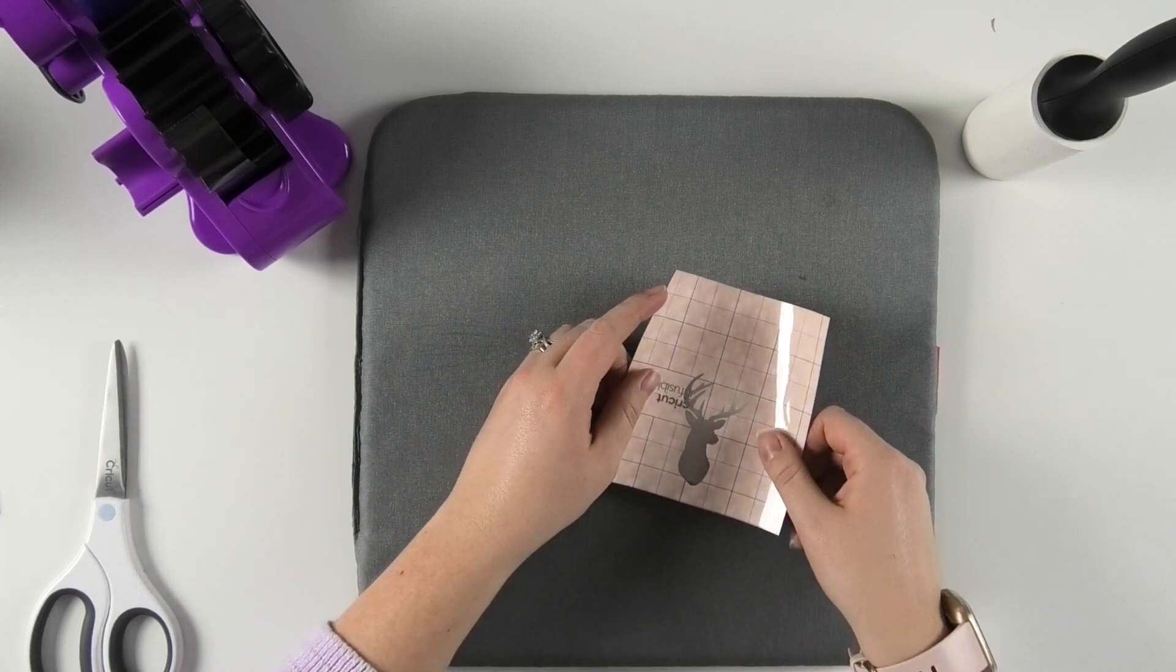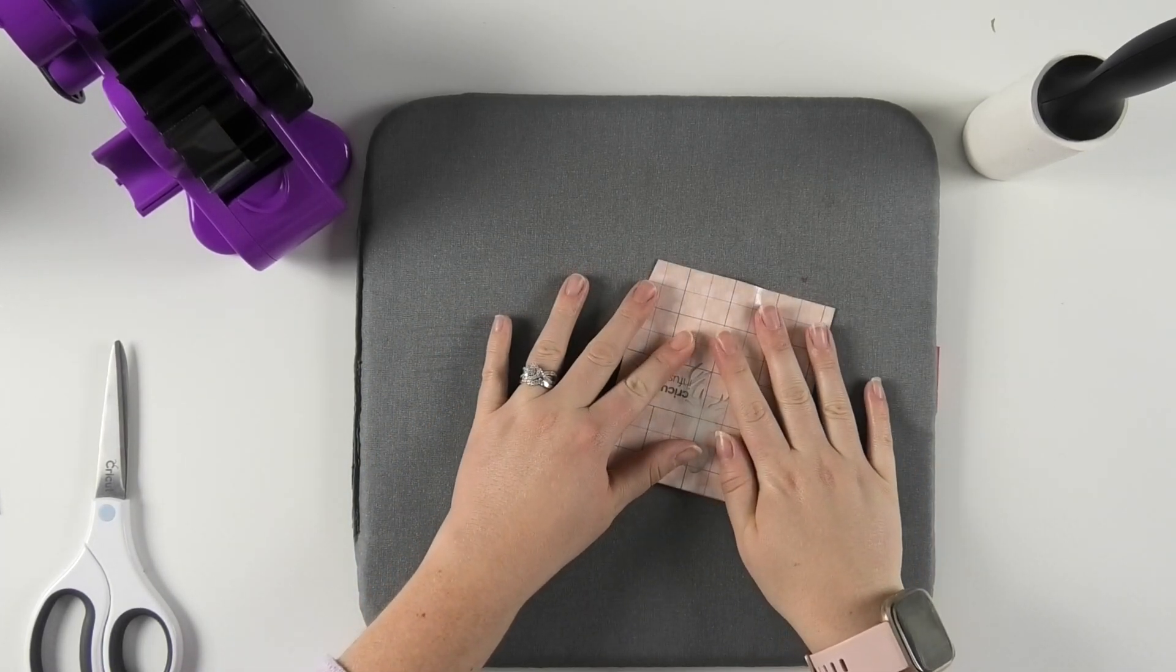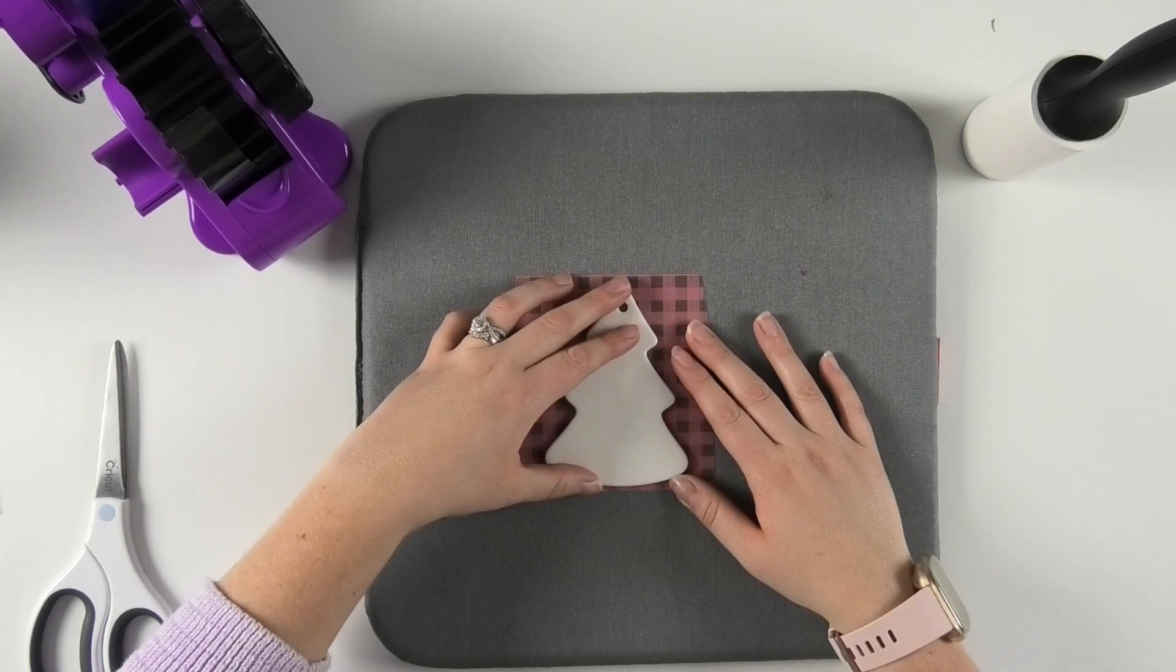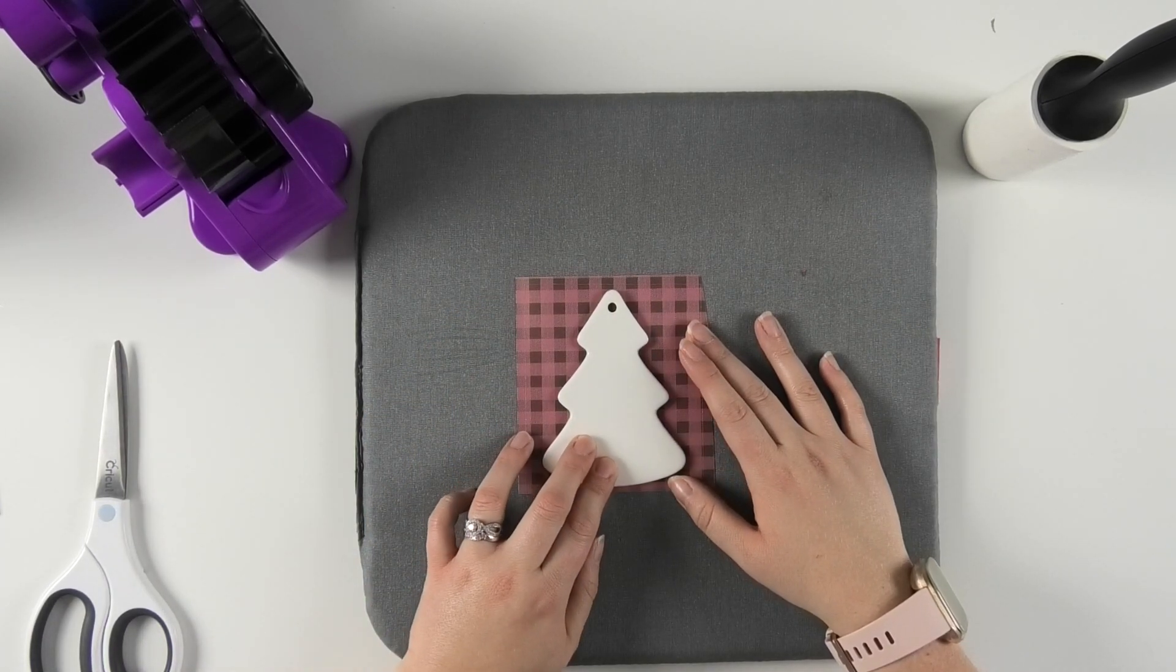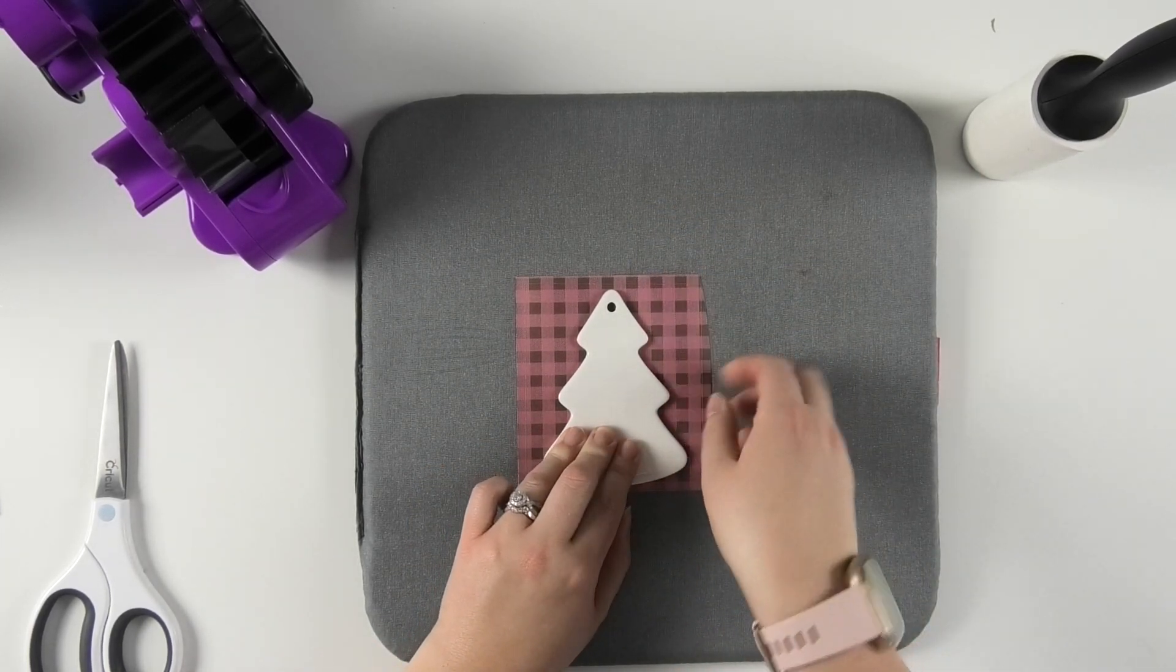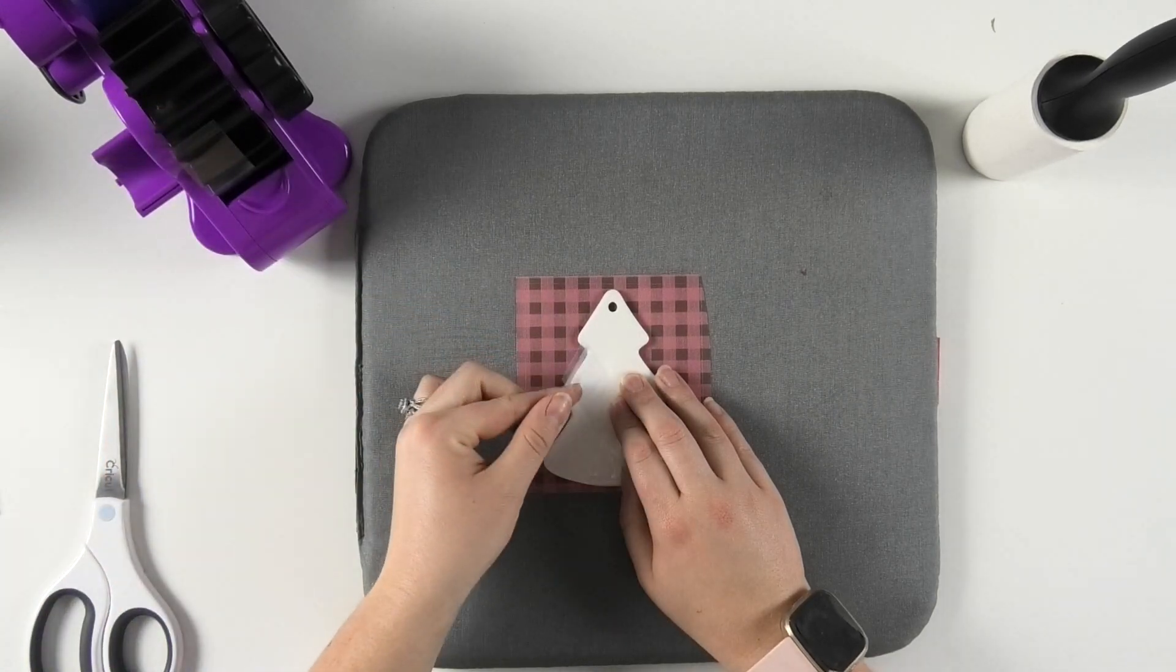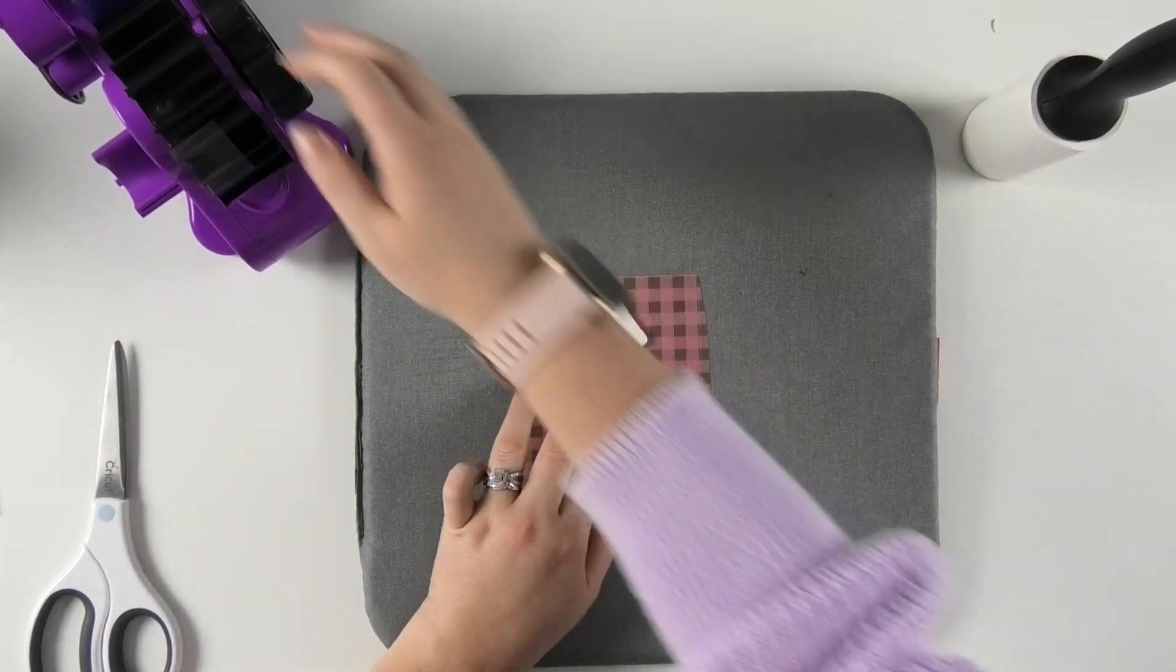So I'm going to put the infusible ink side down onto my tree, and I'm going to kind of place it this way, but I'm going to flip it over to double check my placement on this side. This way I can make sure that my tree is nice and centered and that the antlers of the buck aren't coming off the side of my tree. And once I'm happy with the placement, I'm going to take some heat resistant tape, and I'm going to tape the infusible ink down on top of the ornament so that it doesn't move.